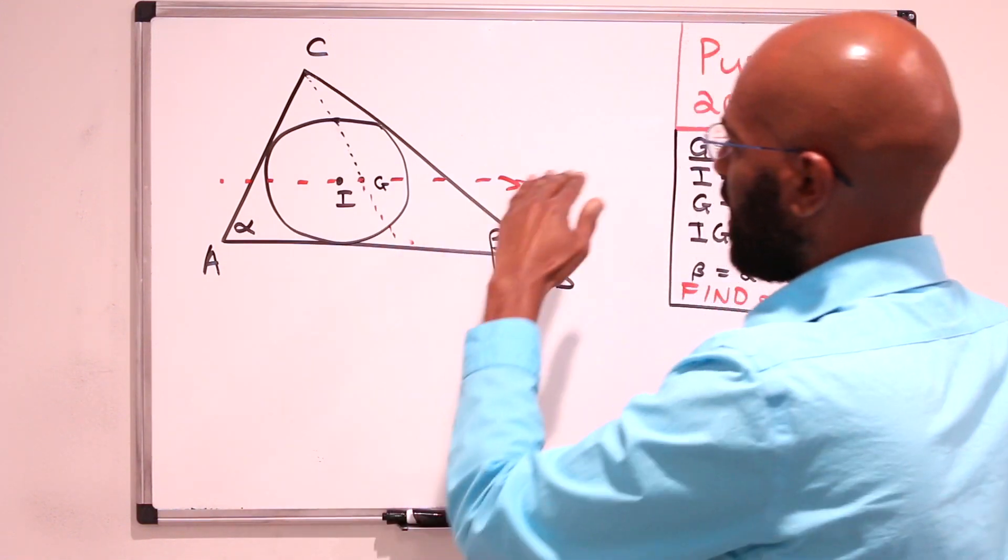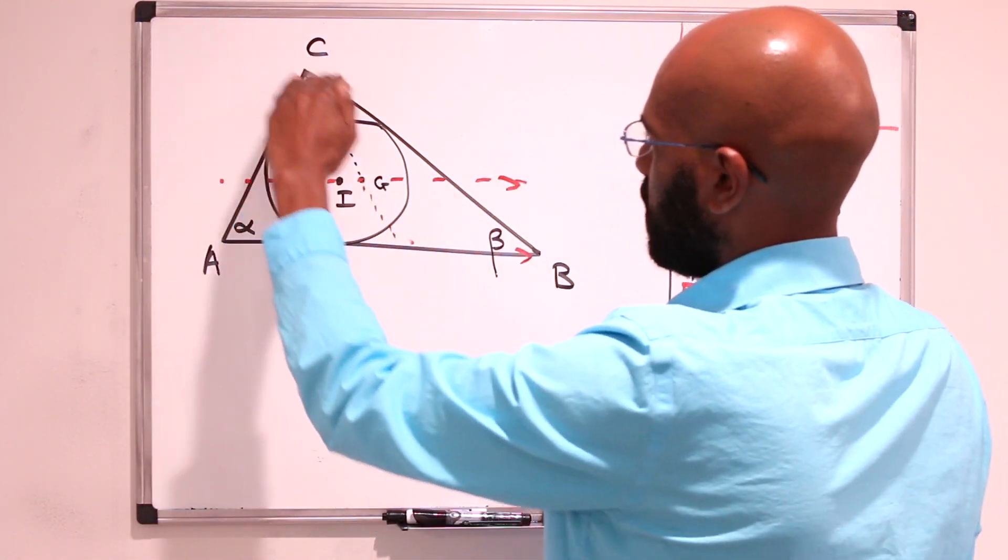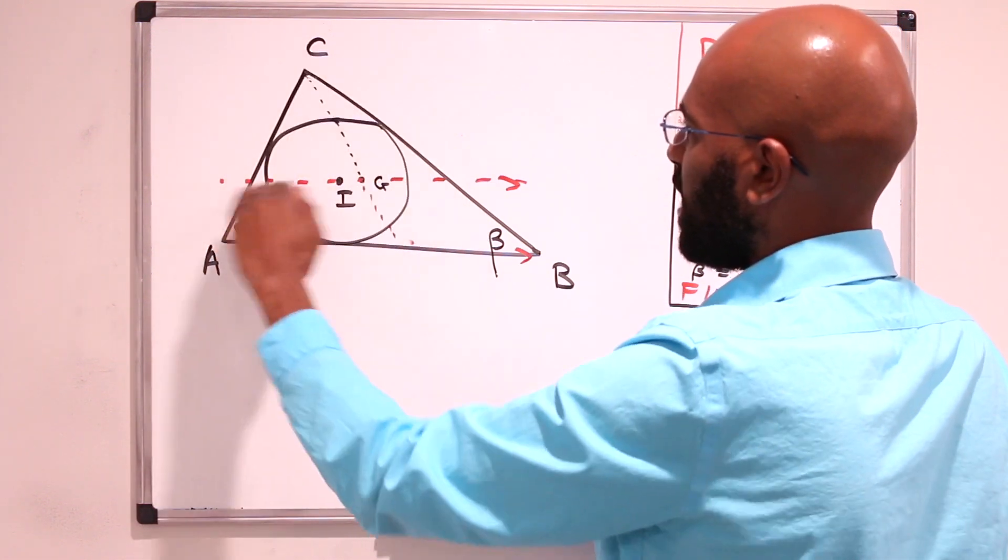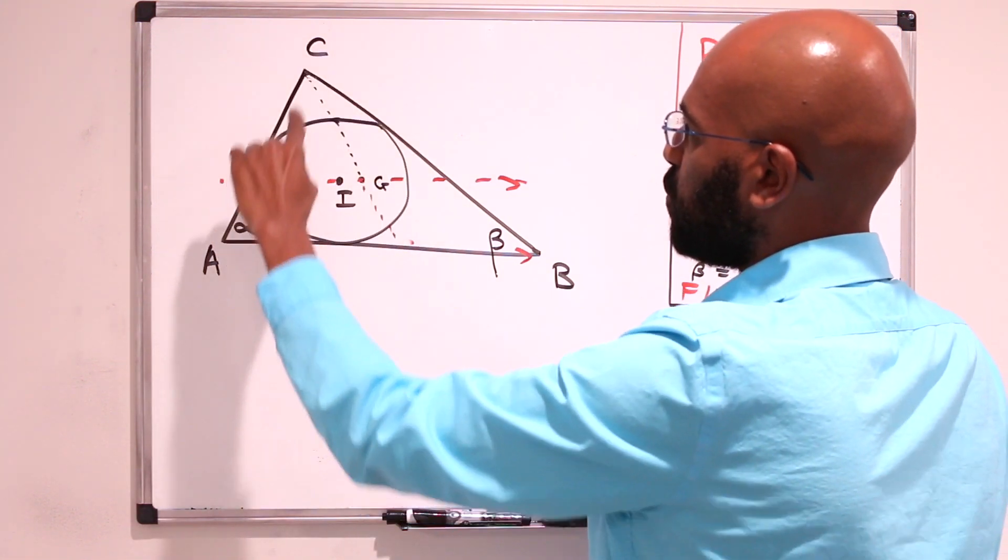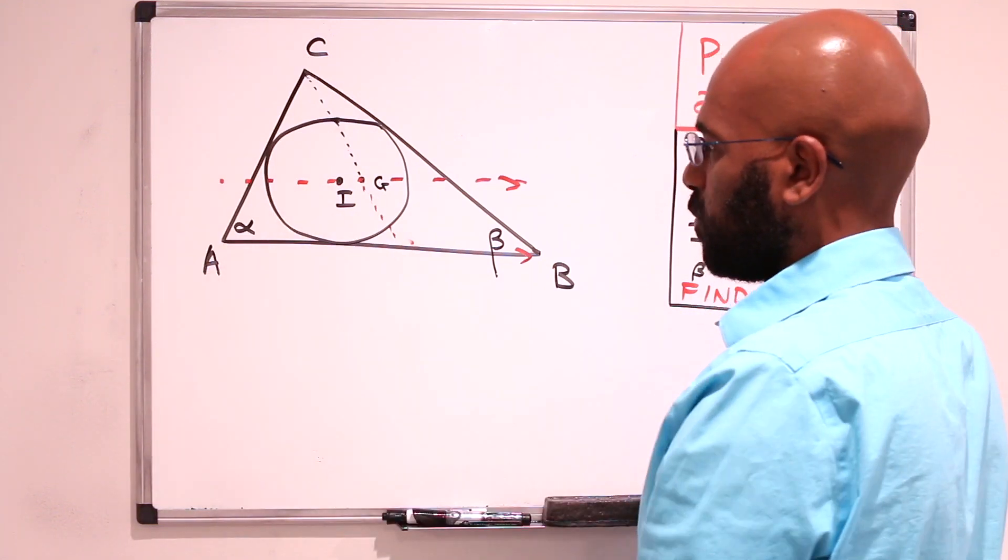So we have that this triangle right over here has sides whose ratios are two-thirds of this larger triangle that we're dealing with.